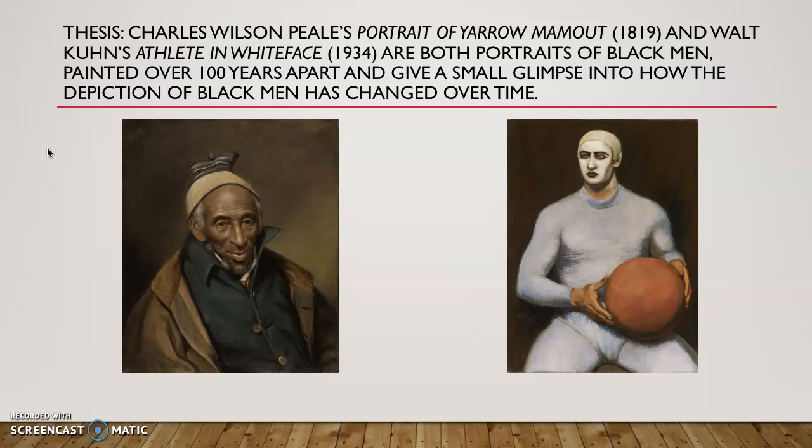The two paintings I'm excited to share with you today are Charles Wilson Peale's Portrait of Yarrow Mamout and Walt Kuhn's Athlete in Whiteface. The Portrait of Yarrow Mamout was painted in 1819 and Athlete in Whiteface was painted in 1934. They are both portraits of Black men painted 115 years apart and tell two different stories, but I'm sure they also share many similarities. Just how much has the perception and depiction of Black men changed over time?